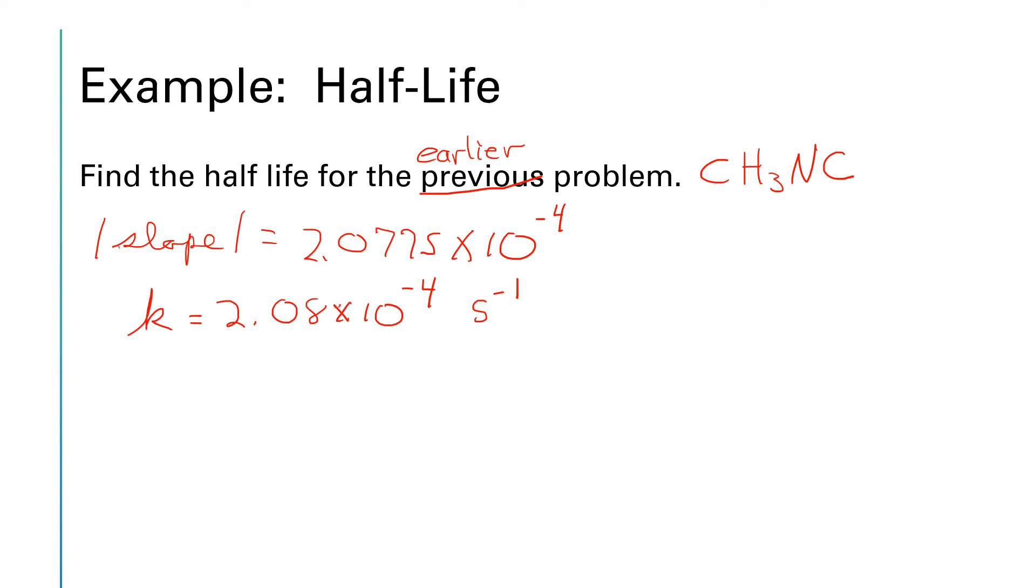Okay, so the half-life is given by the natural log of 2 over k. And so it will be the natural log of 2 divided by 2.08 times 10 to the minus 4. And let me run that through my calculator. The natural log of 2 divided by 2.08 times 10 to the negative 4. And that works out to be 3.33 times 10 to the third seconds. So that's 3,330 seconds for the half-life.